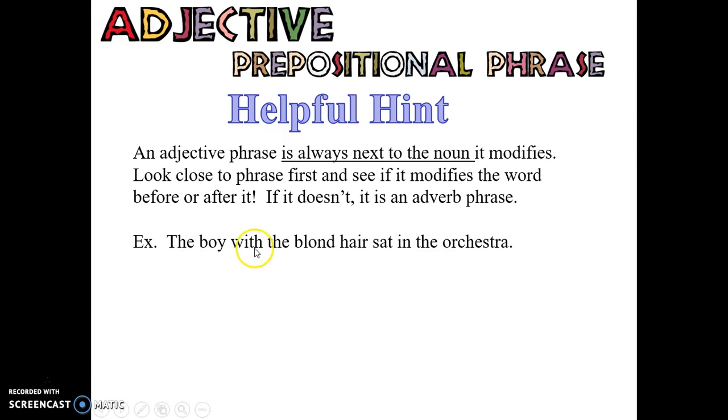Therefore, it is an adjective phrase. Pretty easy, right? Here's a helpful hint. An adjective phrase is almost always next to the noun it modifies. Actually, it's always next to the noun it modifies. So look close to the phrase first and see if it modifies the word before or after it. If it doesn't, then it's almost always an adverb phrase. Just a helpful hint. For example, the boy with the blonde hair sat in the orchestra. With the blonde hair is right next to boy and it does modify boy. It tells us which one. That makes it an adjective phrase.